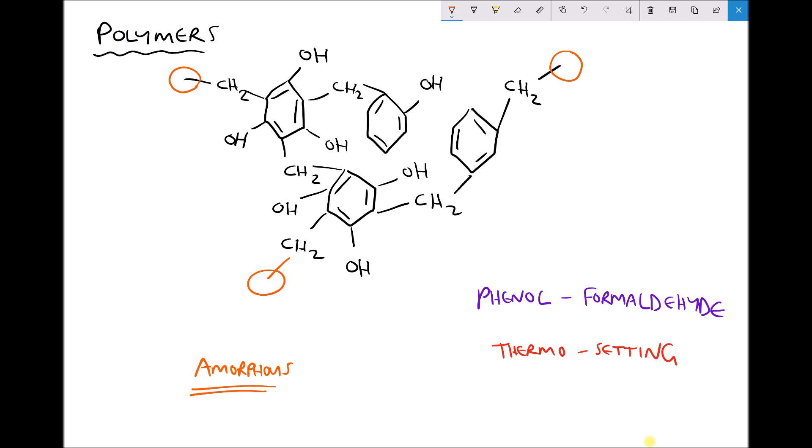Hopefully what you will have noticed is that the linear molecules tend to form much more crystalline structures. Whereas the branched molecules sit somewhere in between. And then at the far end we have the cross-linked molecules which tend to form our more amorphous structures. So in the next video we're going to look at how all of these structural elements affect the properties of different polymers.